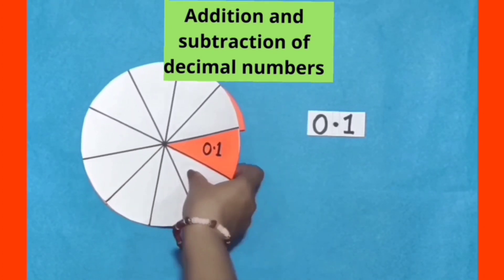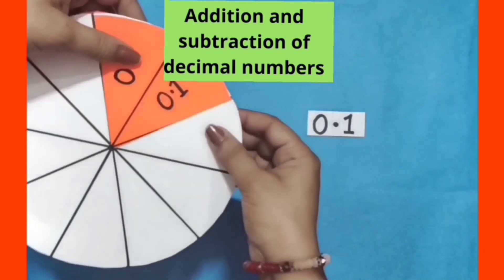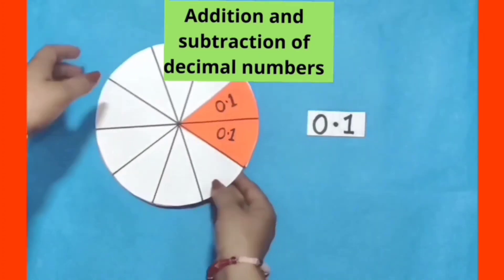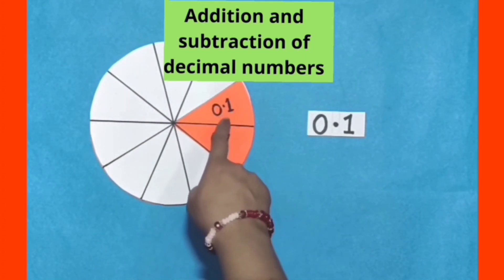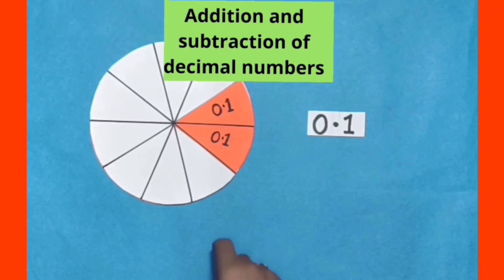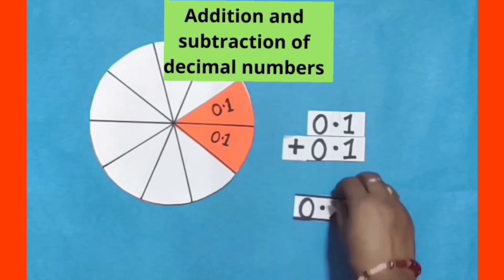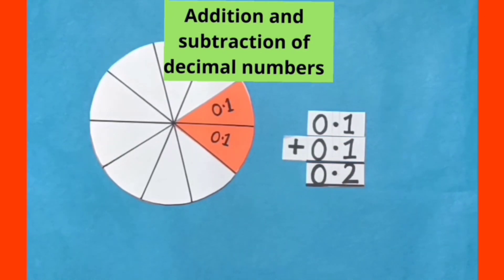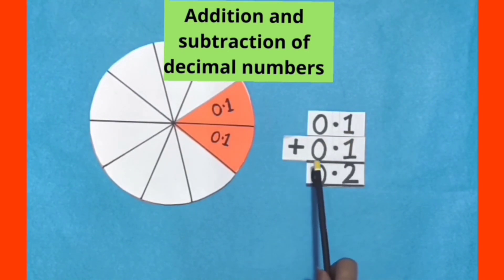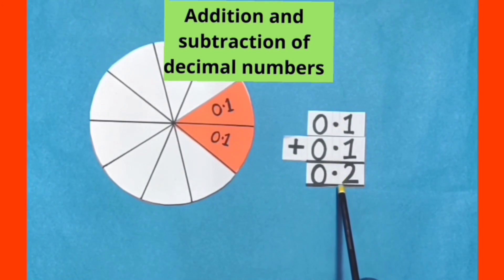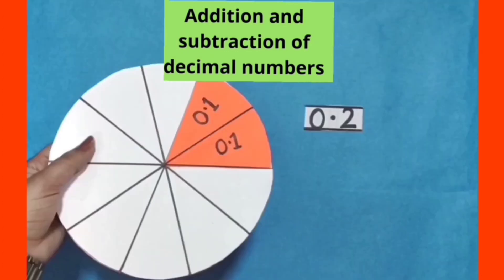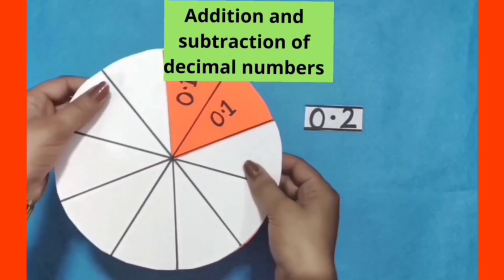When we add 1 more colored part of the circle to the first one, we get 2 colored parts of the circle. That means we have to add 0.1 to 0.1 to get 0.2. While adding decimal numbers, write the addends one below the other so that the decimal points of all the addends are one below the other.